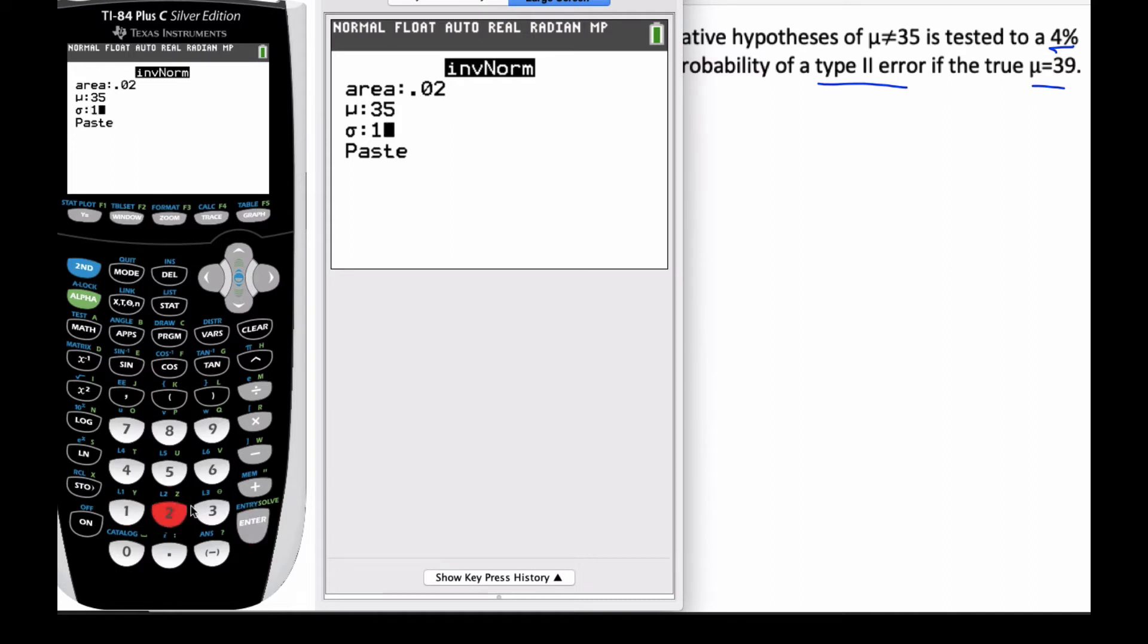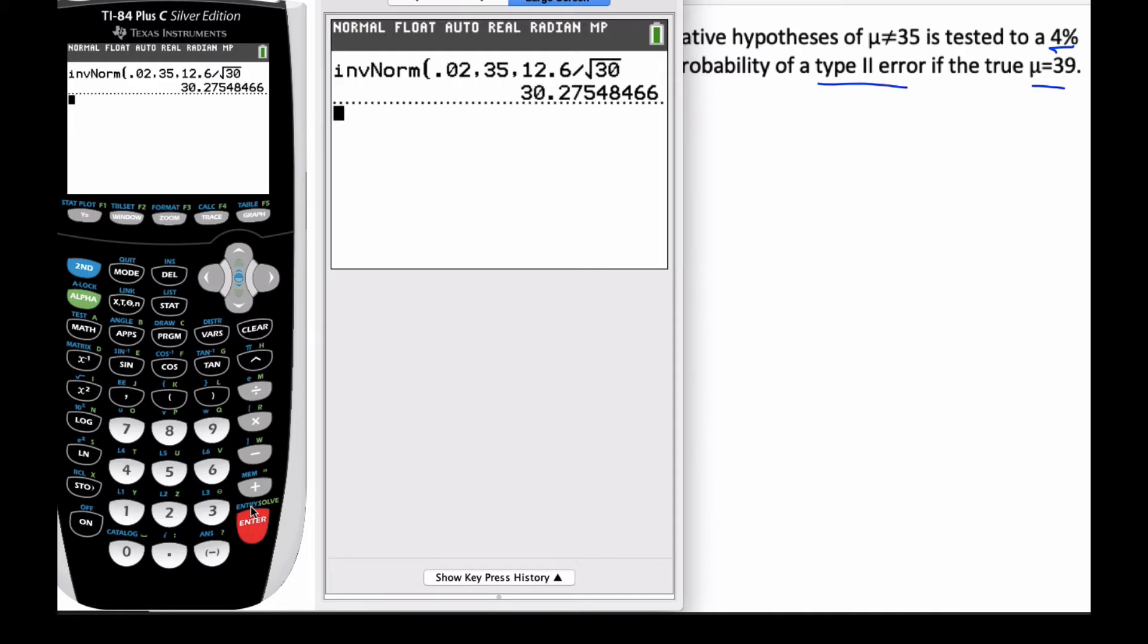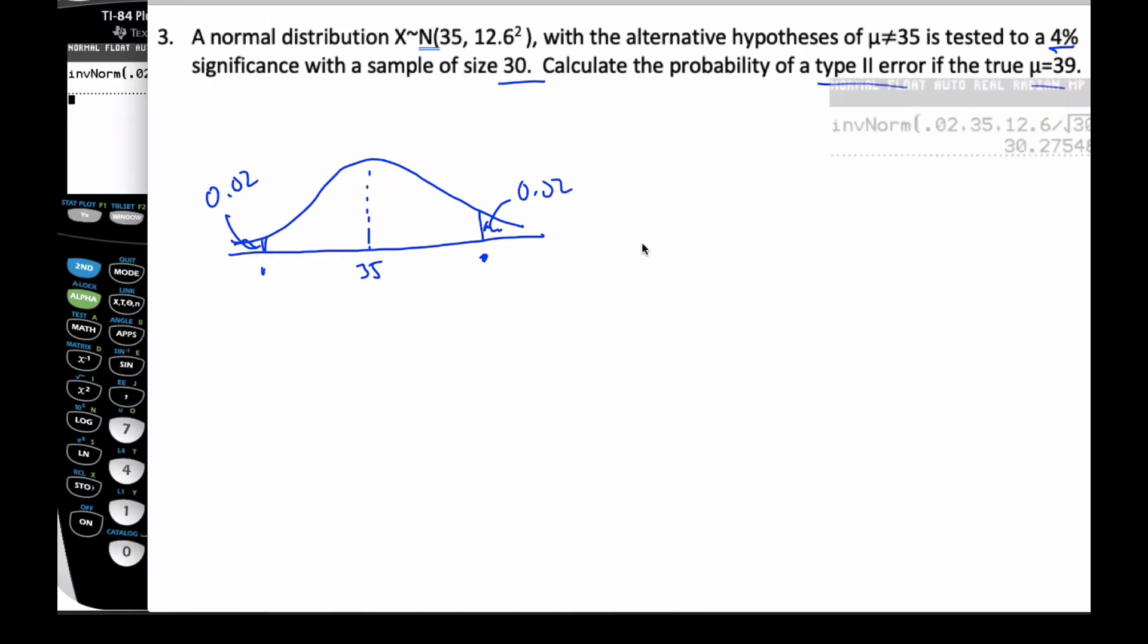My standard deviation is 12.6 divided by the square root of 30, because every single number inside this normal curve is actually an average value. Each number inside here is really a group of 30 numbers.